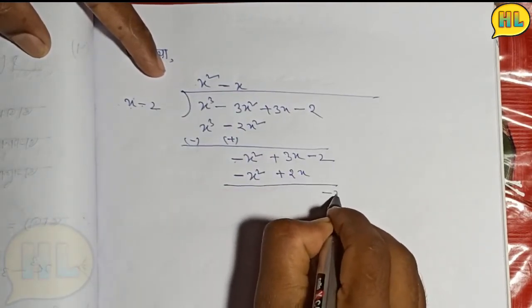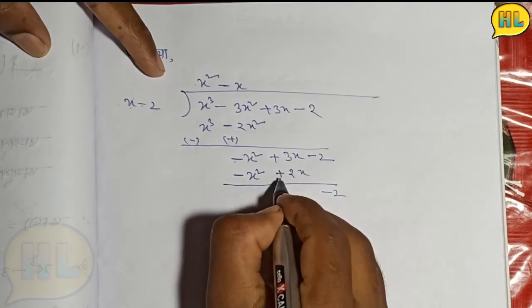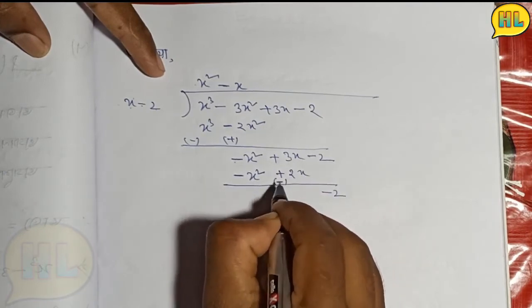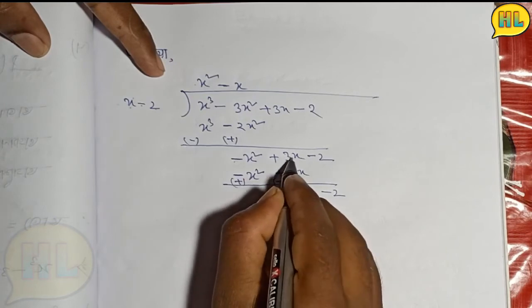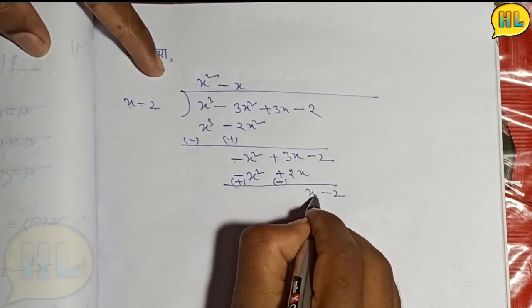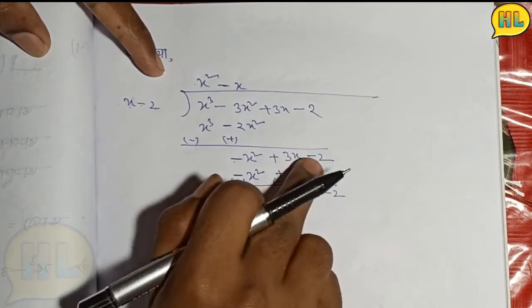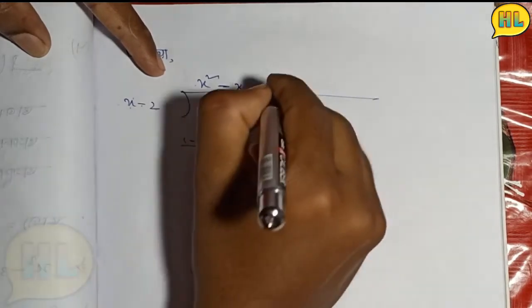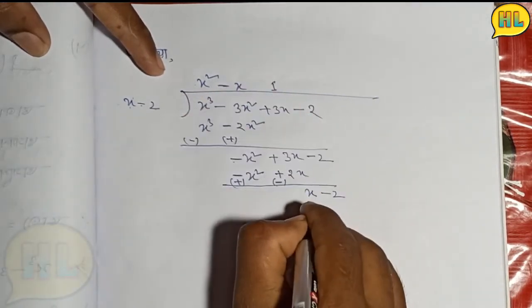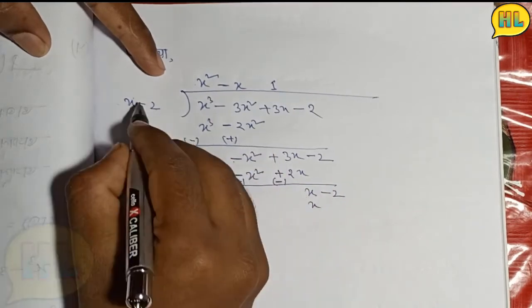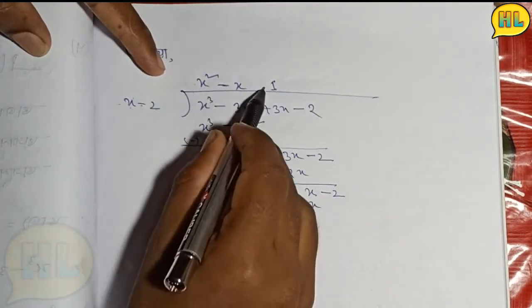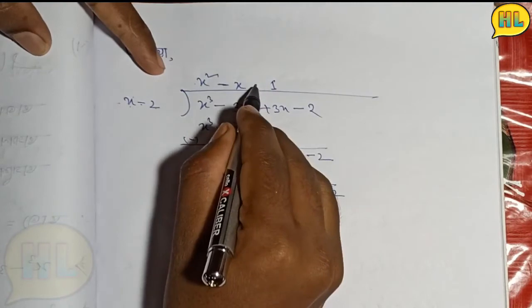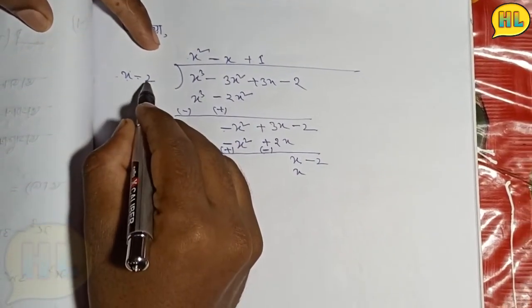So we're going to get minus, minus plus gives plus. 3x and 2x gives a single x. And all of these terms on the right side, x times x square equals x cube.